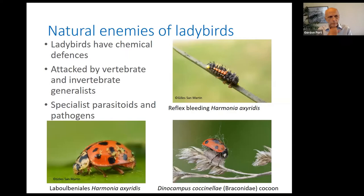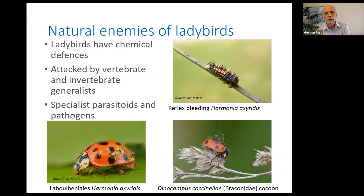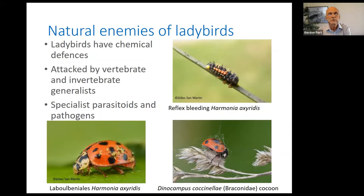Ladybirds have chemical defences. Here is a larva of a harlequin ladybird exuding a pustule of chemical in a process known as reflex bleeding, which is a defence against predation. Ladybirds are distasteful, which is one reason we imagine they have this bright colouration — making them very easy to spot. They are defended from many natural enemies by their chemical defences, but this doesn't stop them being attacked by a range of vertebrate and invertebrate predators, including spiders' webs, birds, and mammals.